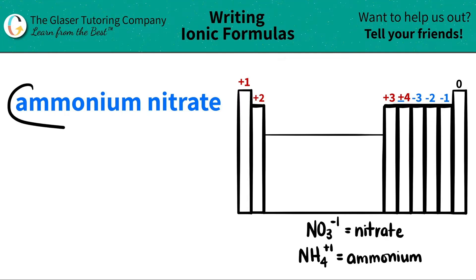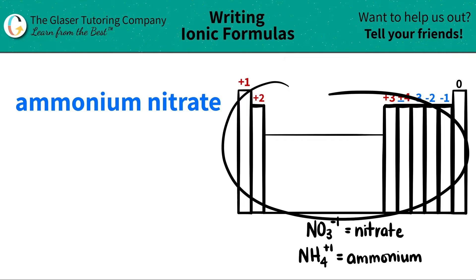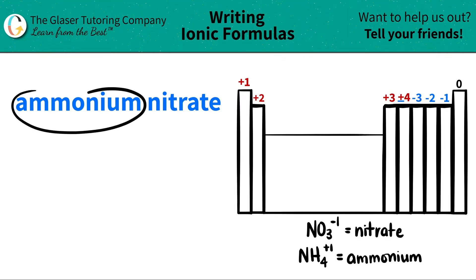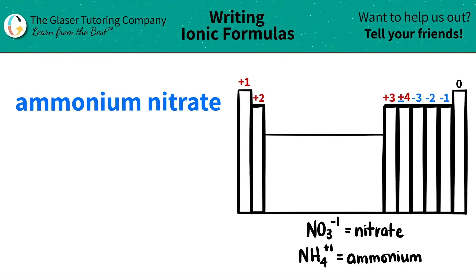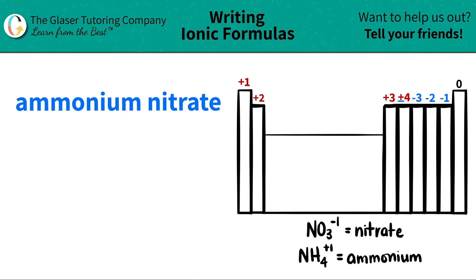The first thing I see is ammonium, so I'm going to scan the periodic table to see where ammonium is. But I look high and low, left to right, and I don't see it — ammonium is not on the periodic table. That means ammonium is a polyatomic ion, and polyatomic ions are never on the periodic table; you have to memorize them. Ammonium is NH4 with a +1 charge.